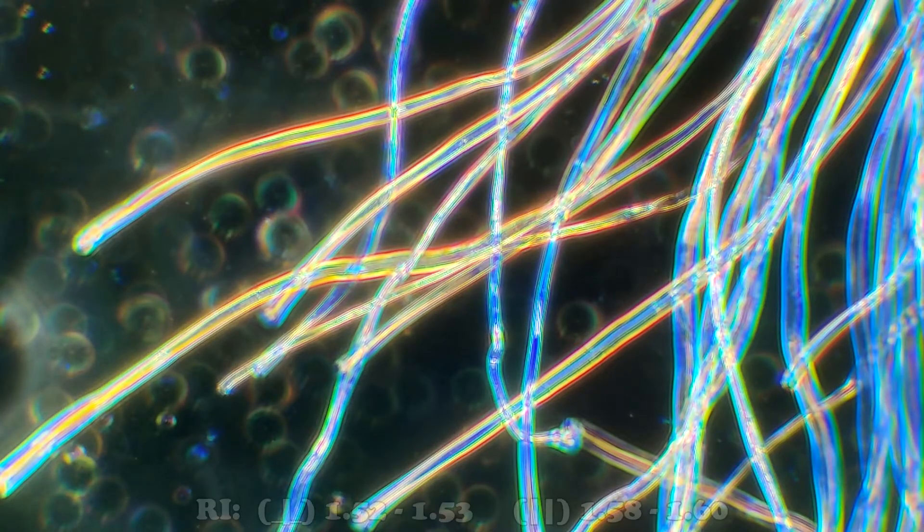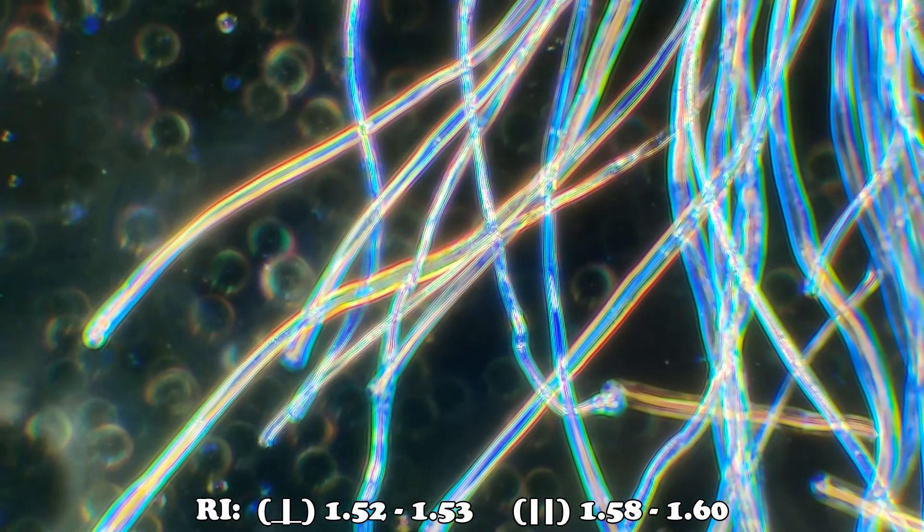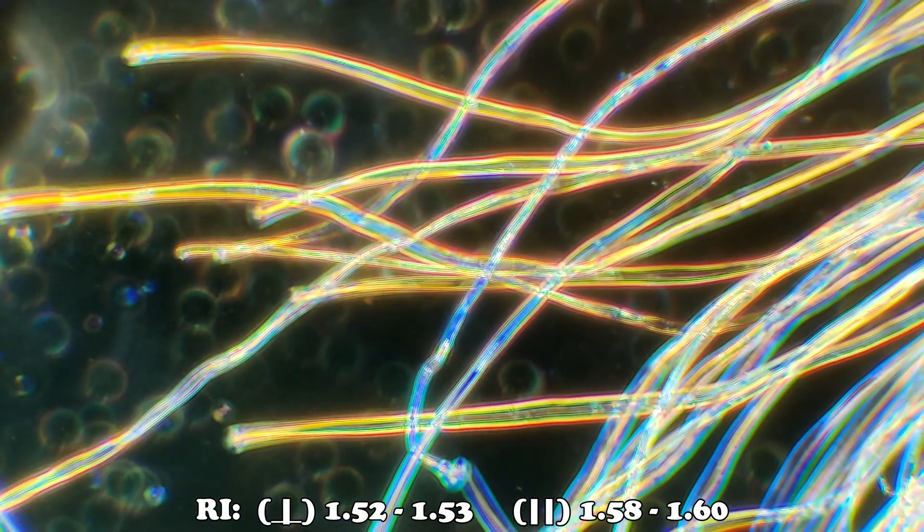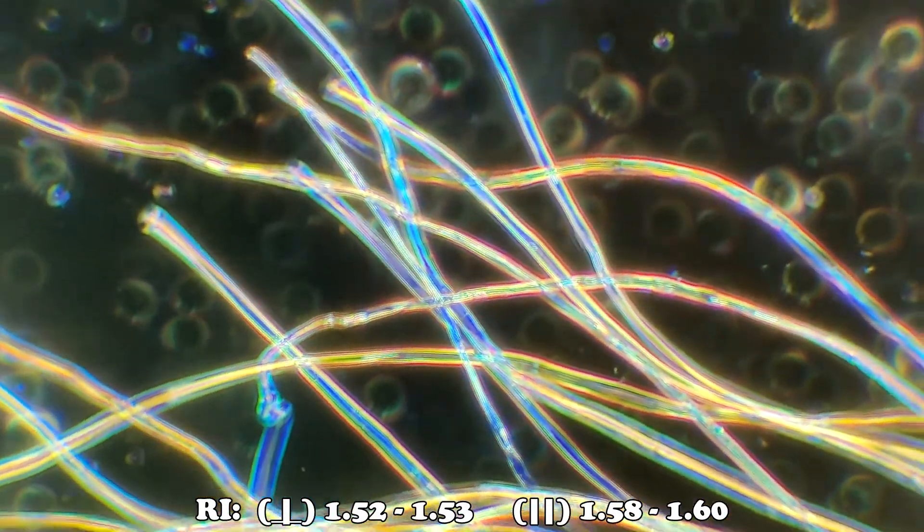When immersed in 1-5-5 refractive index liquid and observed with central stop dispersion staining, the fibers will exhibit blue and yellow dispersion colors.